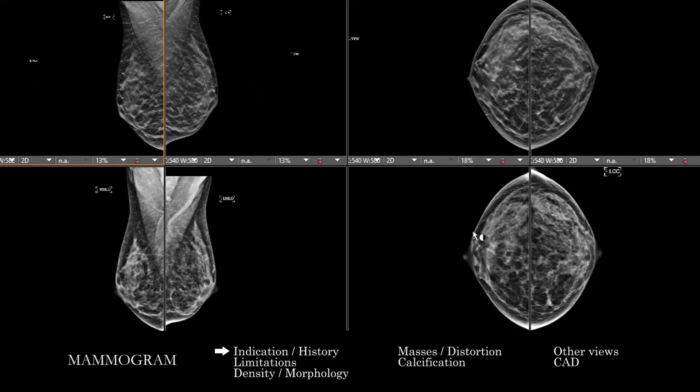If there's prior breast biopsy, surgical history, treatment history, or high-risk patient factors, you want to have a sense of that. The appearance of the breast is also going to depend on things like if the patient is pregnant, lactating, if they're on any sort of medications, or have any clinical factors that impact their hormones, as that can also change the appearance of the breast.